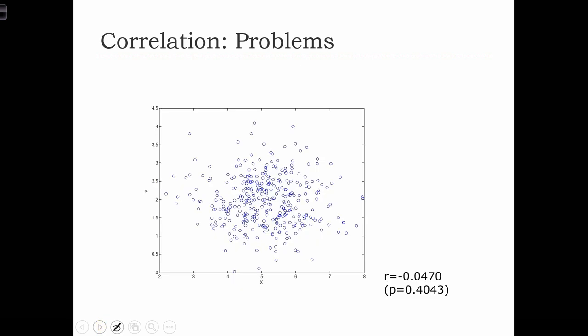Here is the scatterplot between two variables that are not related to one another. The correlation statistic is very close to 0, meaning that this scatterplot has no relationship, and the p-value of that correlation is 0.4. So it's a highly insignificant correlation, close to 0, not giving us any indication that there's a relationship here.